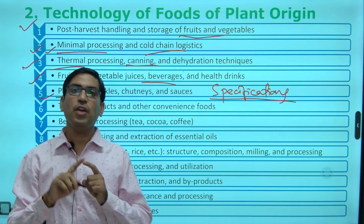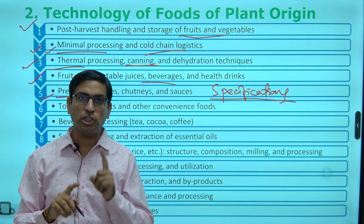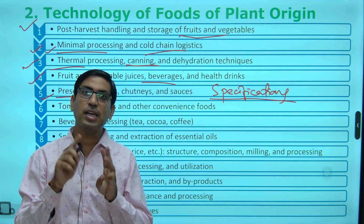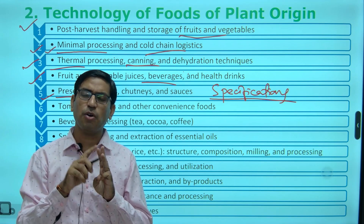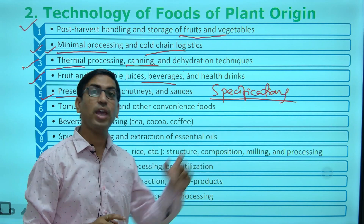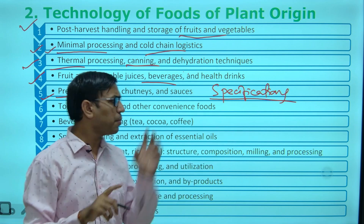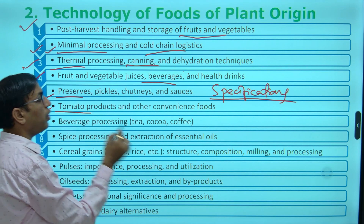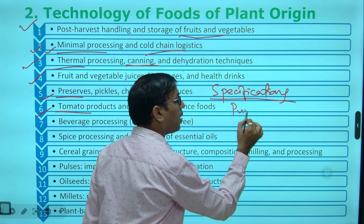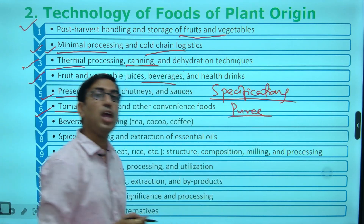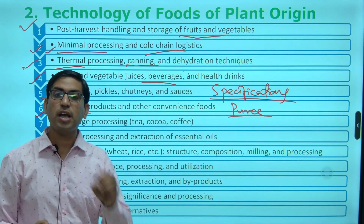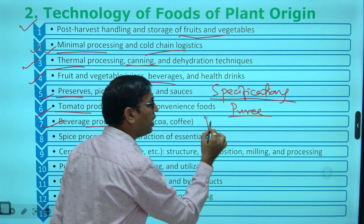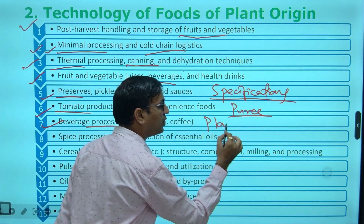For example, if we are talking about ketchup, then what are the specifications in terms of pulp, brix, TSS, or acidity? Similarly for jam, jelly, marmalade — all things, convenience food, tomato products — even concentrated forms of these. Beverages, specifically plantation crops, are also included.